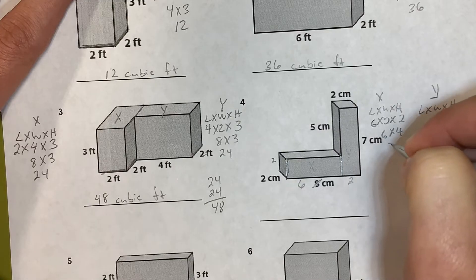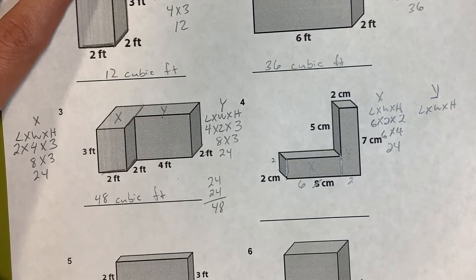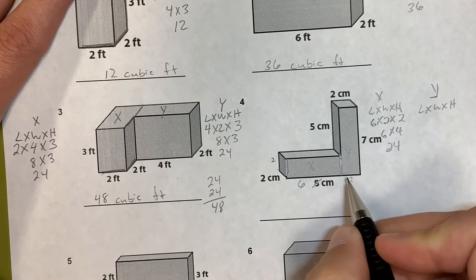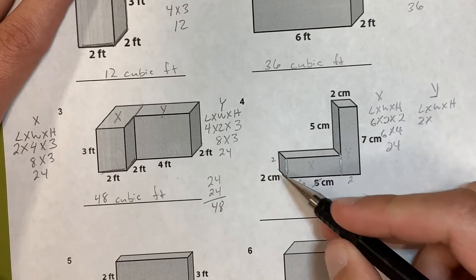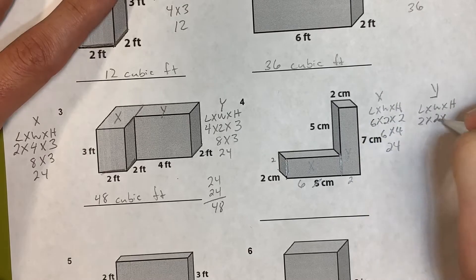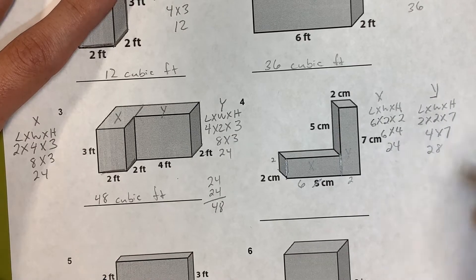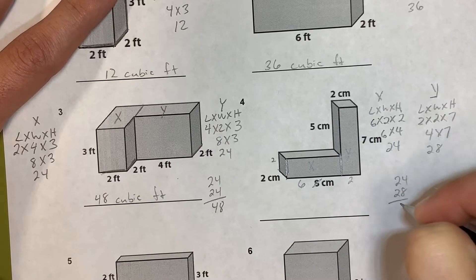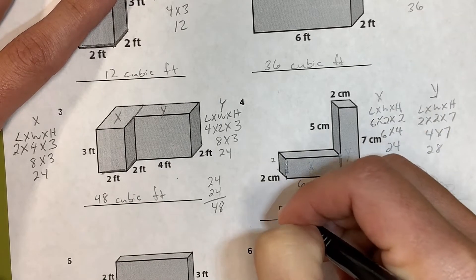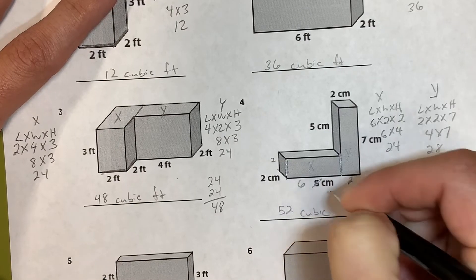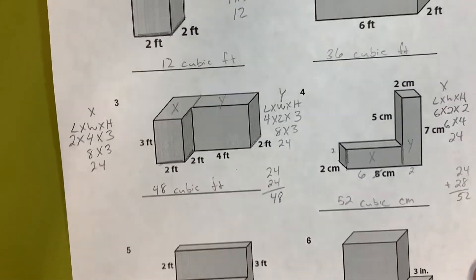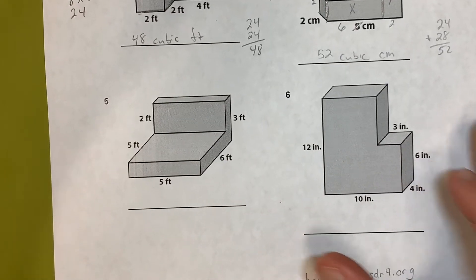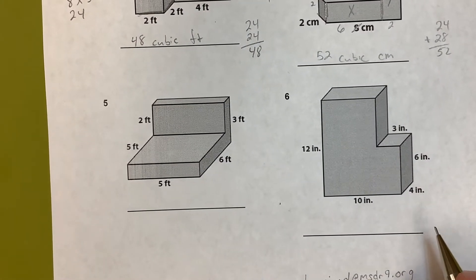For Y: the length is two, the width is still the same, and the height this time uses the whole thing — seven. Two times two is four, and four times seven is twenty-eight. So twenty-eight plus twenty-four is fifty-two cubic centimeters.